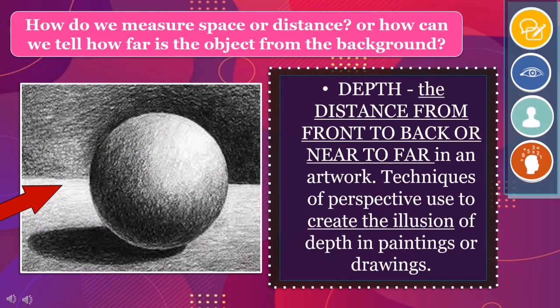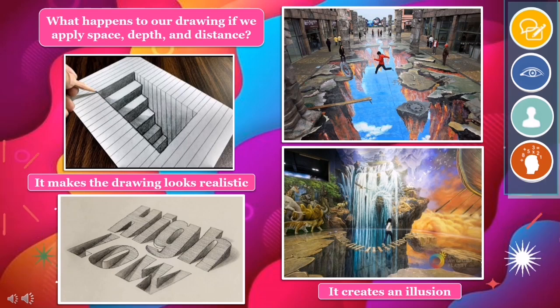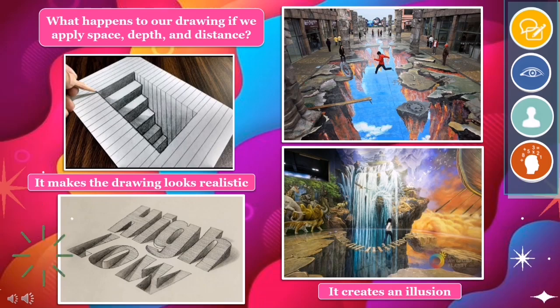How do we measure space or distance? Or how can we tell how far the object is from the background? It is depth. Depth is the distance from front to back, or near to far in an artwork. We have techniques of perspective used to create the illusion of depth in paintings or drawings. When we apply space, depth, and distance, it makes the drawing look realistic and creates an illusion.